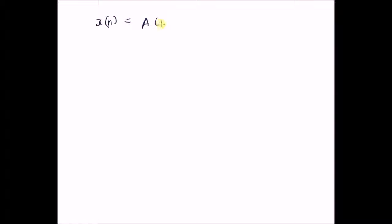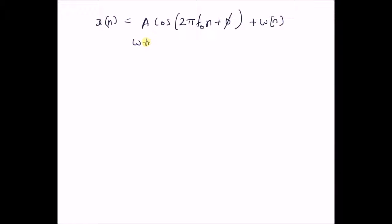So, let us look at the signal model. X(n) is equal to A multiplied by cos of 2π·f₀·n plus the phase component φ, plus W(n). Here W(n) follows a Gaussian distribution with mean 0 and variance σ². And now, we are looking at the estimation of the phase component.